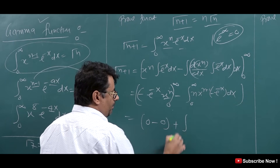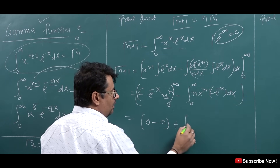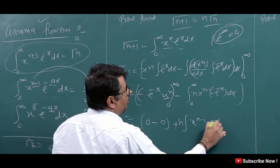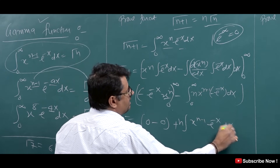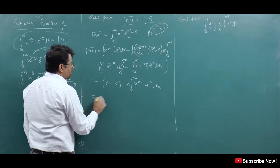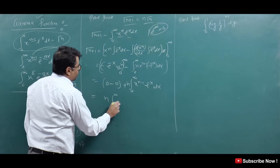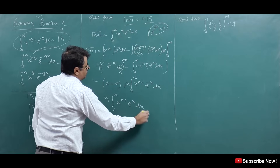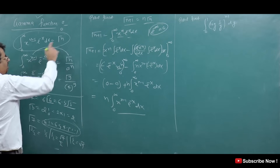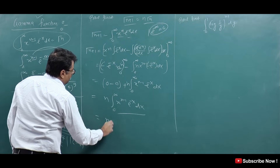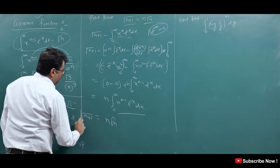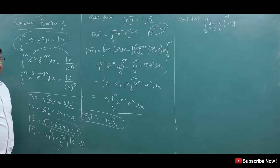So the minus and minus become plus, and n comes out: n·∫₀^∞ x^(n-1) e^(−x) dx, which is zero to infinity. This integral equals Gamma(n). So we can write it as n·Gamma(n). Thus this question is proved: Gamma(n+1) = n·Gamma(n).